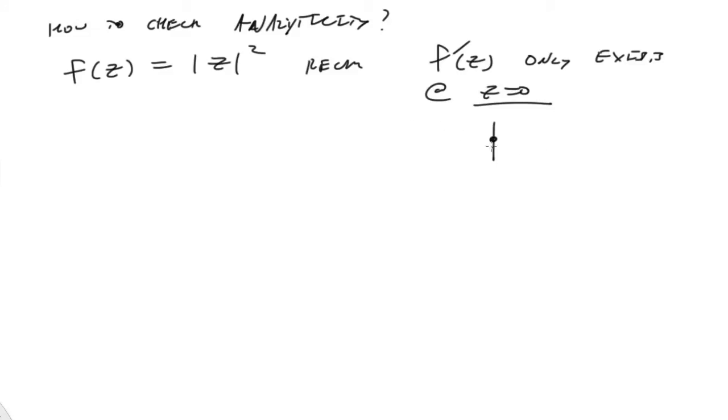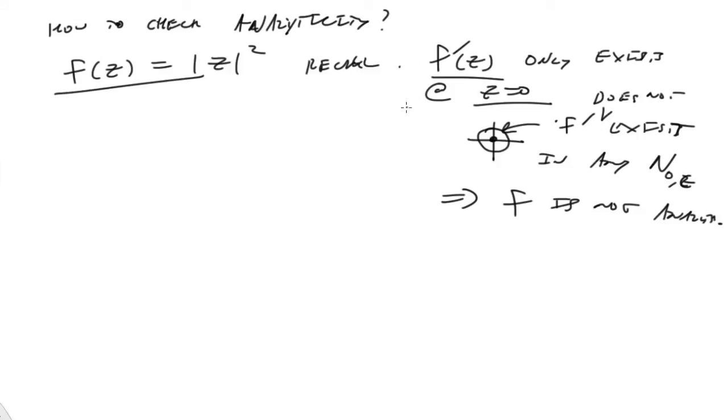And note that now, at the point z equals zero, I can draw a neighborhood around it. And it doesn't exist, the derivative itself doesn't exist in any neighborhood. I should say does not exist in any neighborhood of zero. So we say f is not analytic.